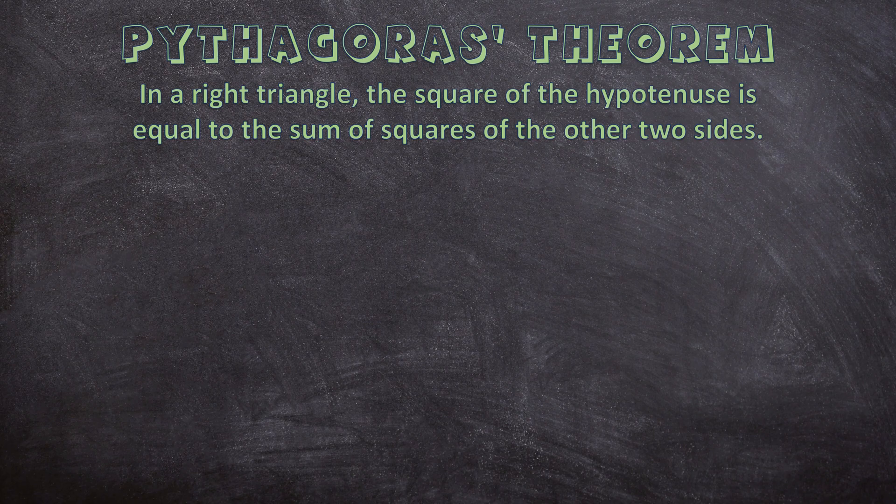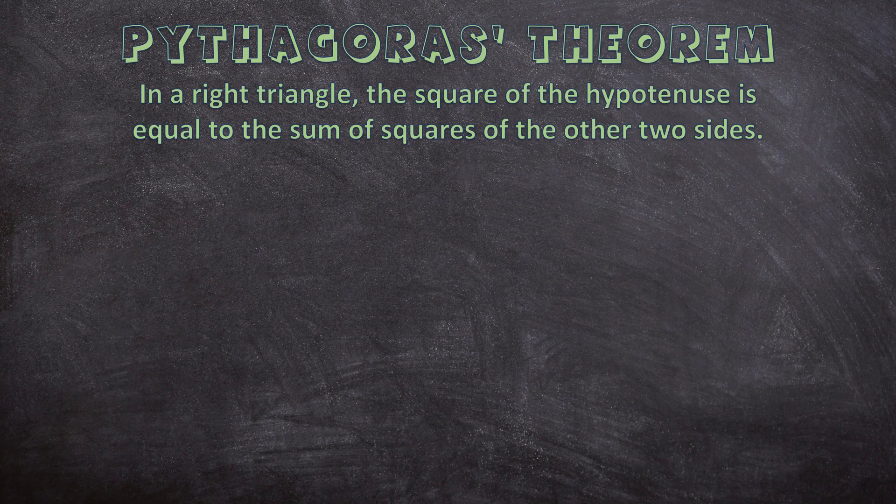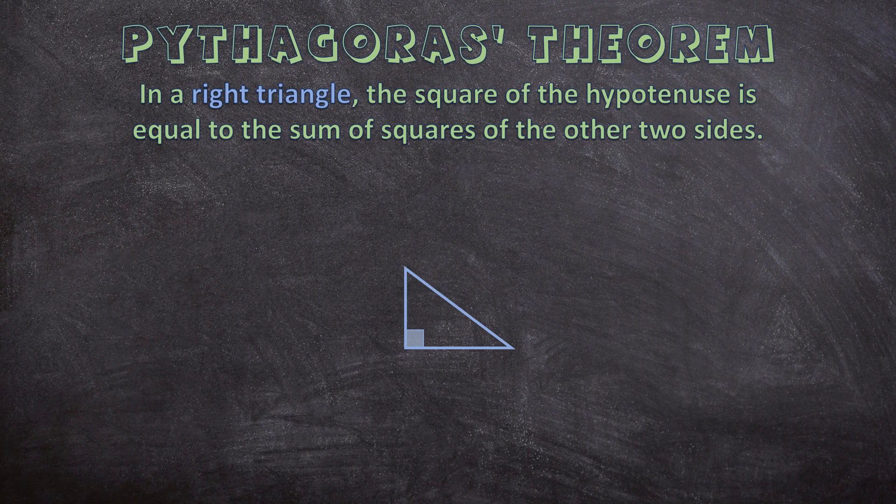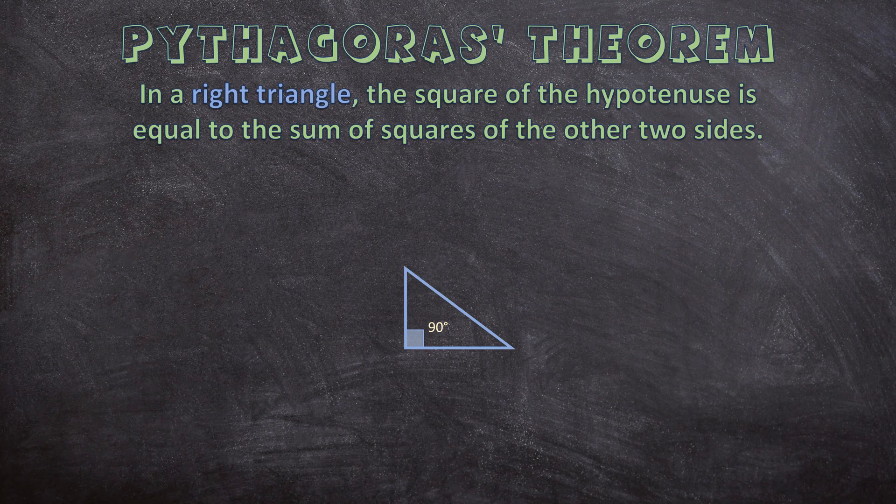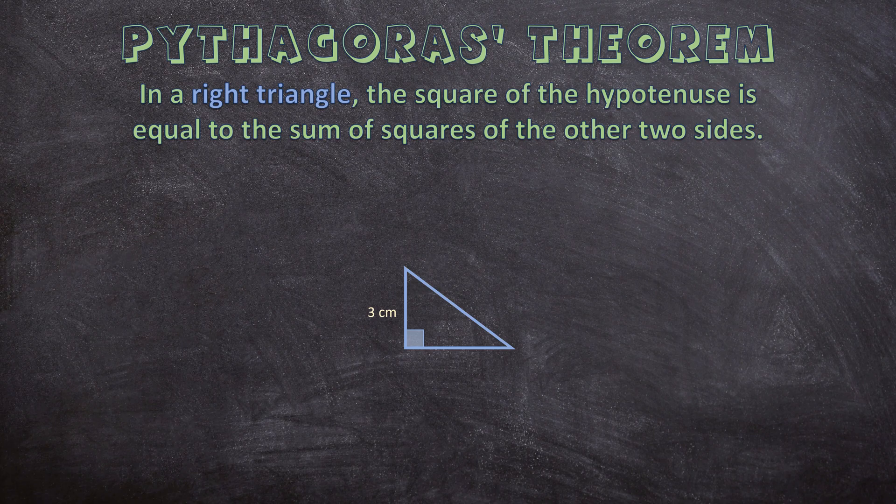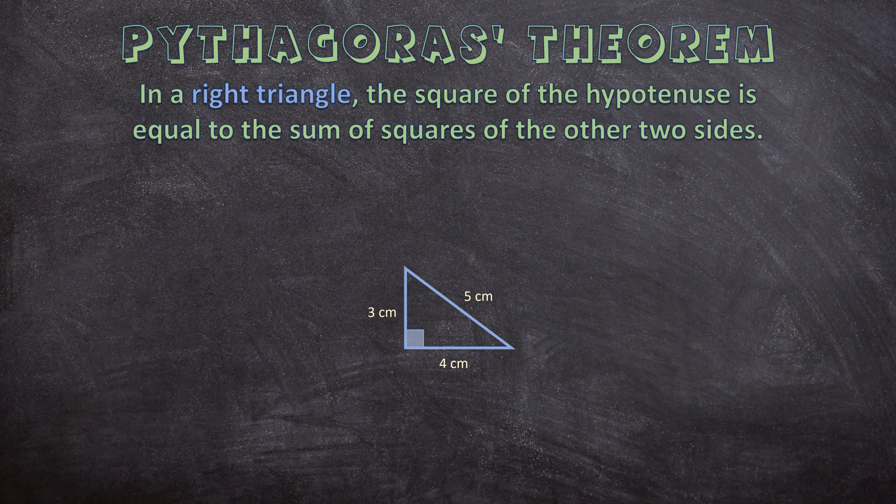So let's start with the first four words: in a right triangle. Now let's draw a right triangle. A right triangle has a 90 degree angle and we indicate a 90 degrees angle with this square. And while we have the triangle, let's also give measurements to the sides. So let's say this side is three centimeters, this side four centimeters and this side five centimeters.